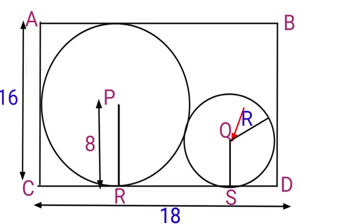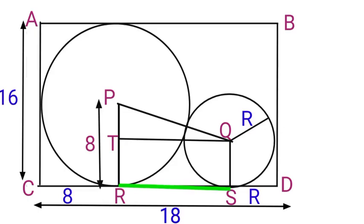Now, let us join point P to Q. When we join that, let us construct a line from Q to this point parallel to RS and let us call it T. Let us assign the length to each line. The total length down here is 18 units. CR will be the same as the radius of the big circle, so it will be 8. SD will be the same as the radius of the small circle, so we call it R. This length RS will be 18 minus 8 minus R, which equals 10 minus R.